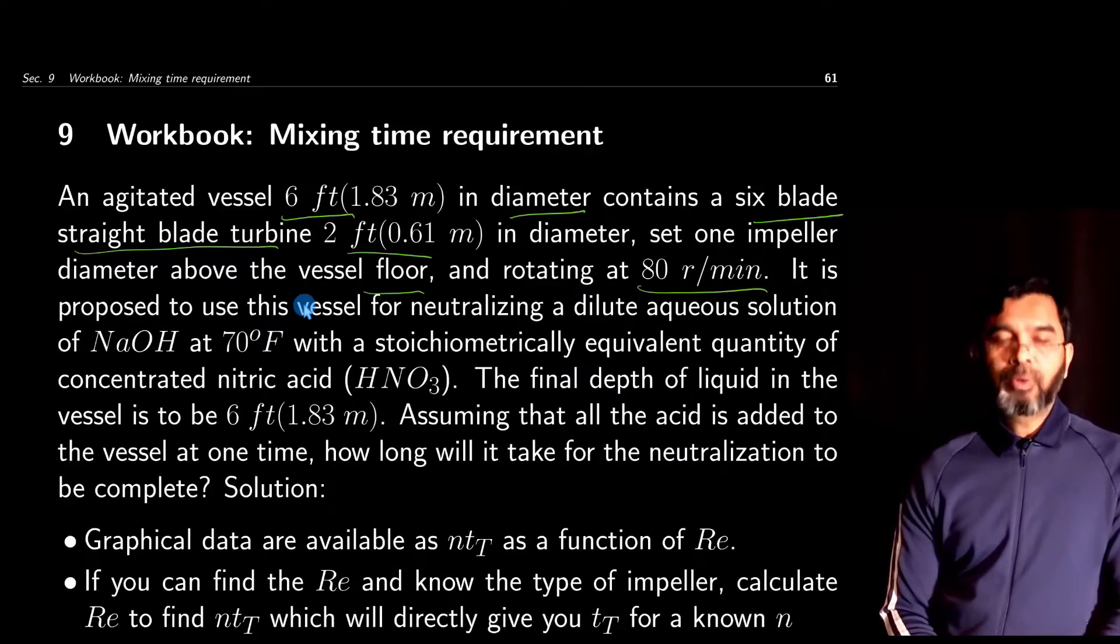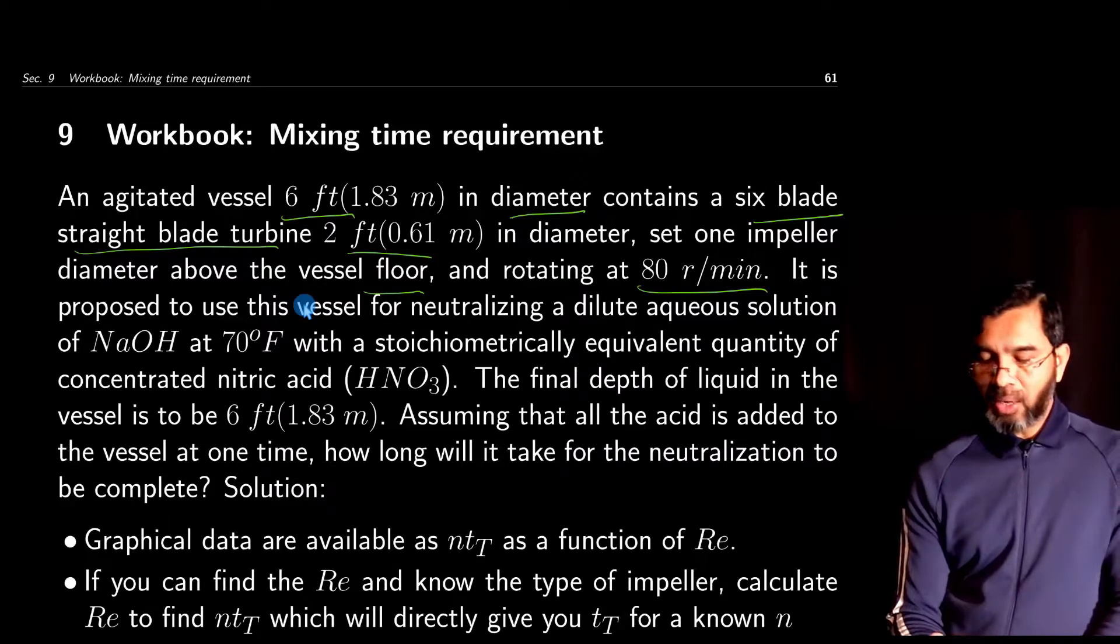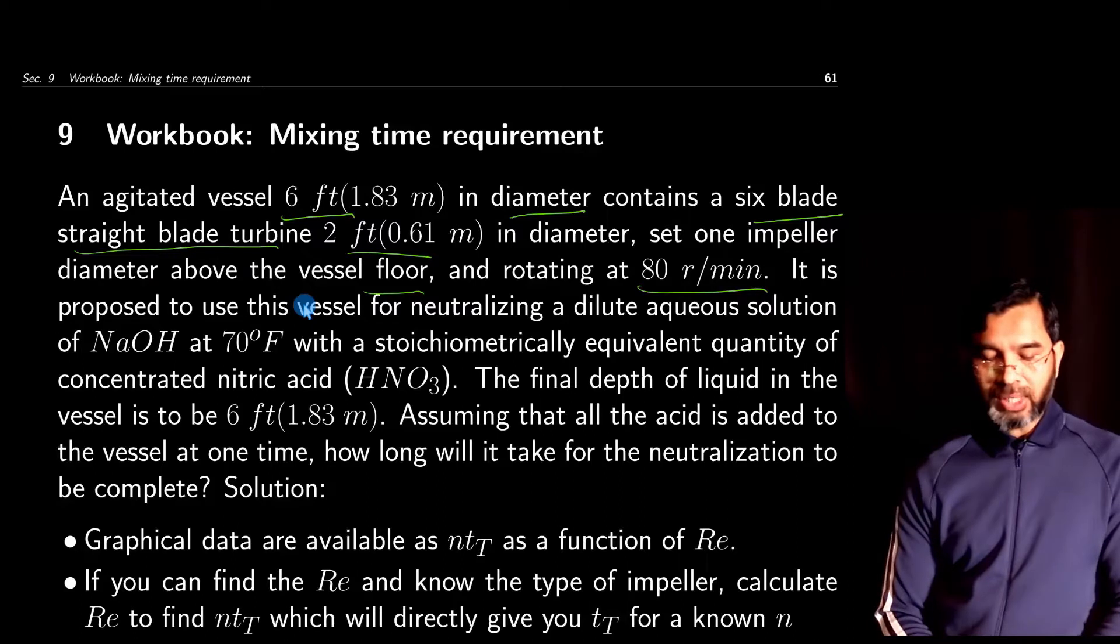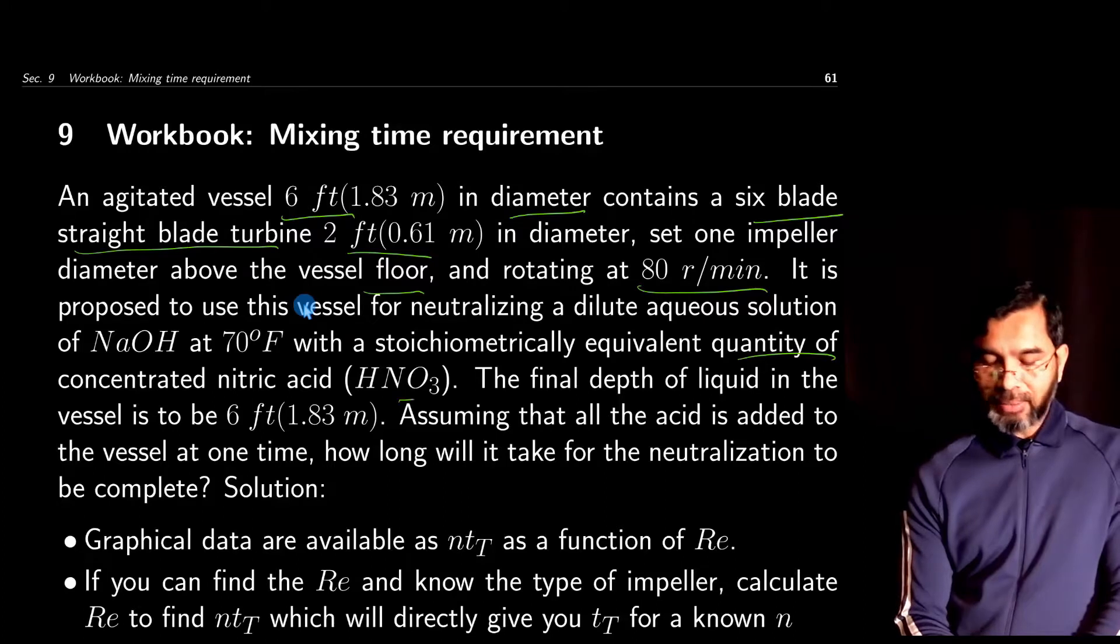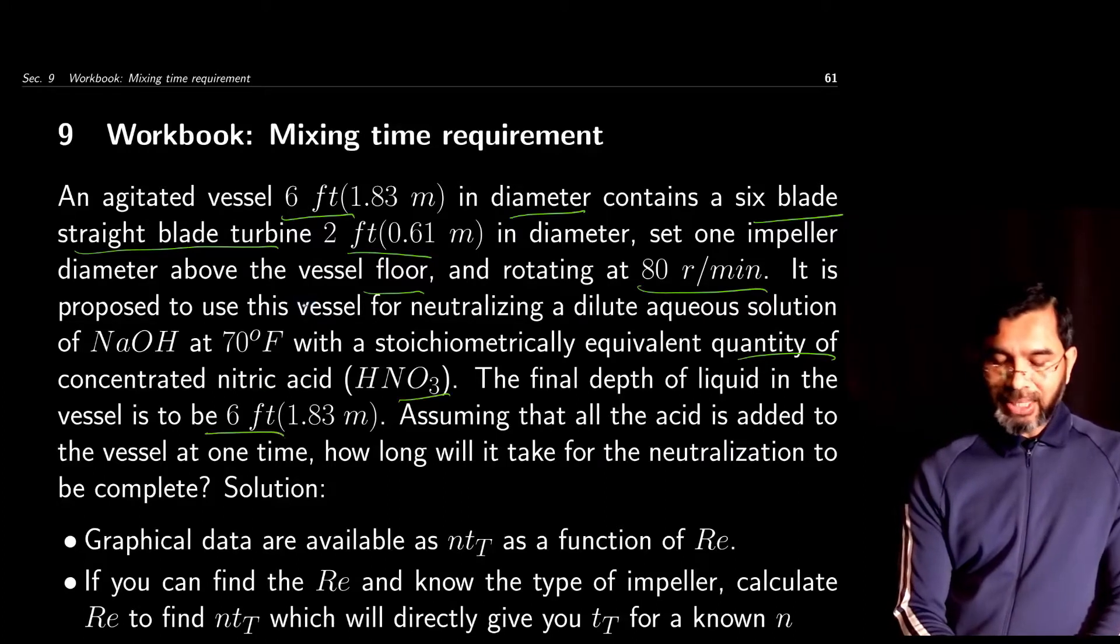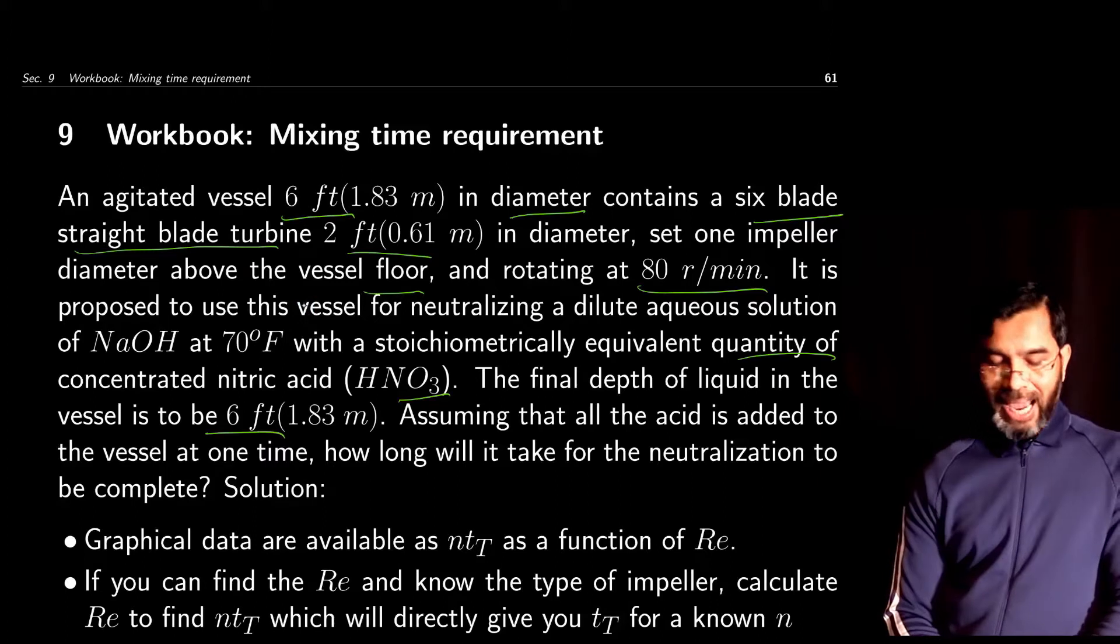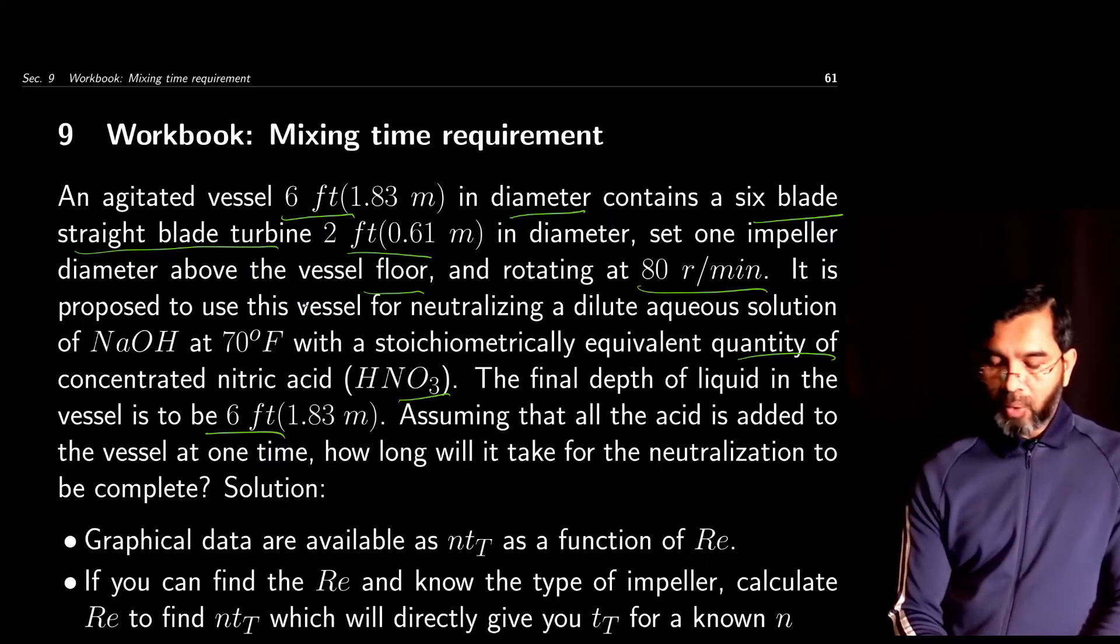It is proposed to use this vessel for neutralizing a dilute aqueous solution of sodium hydroxide (NaOH) at 70°F with a stoichiometrically equivalent quantity of concentrated nitric acid (HNO3). The final depth of liquid in the vessel is to be 6 feet. Assuming that all the acid is added to the vessel at one time, how long will it take for the neutralization to be complete?